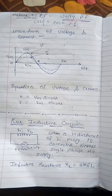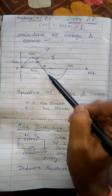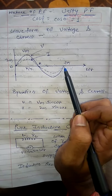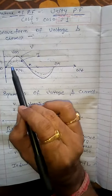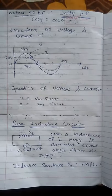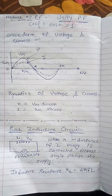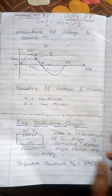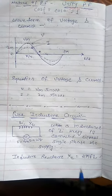For the waveform of voltage and current in a pure resistive circuit: current flows in the same direction, magnitude may differ, but as shown by the dotted line, the current waveform follows the same path as the voltage waveform. Therefore the equations are: V is equal to Vm sin(ωt) and I is equal to Im sin(ωt).